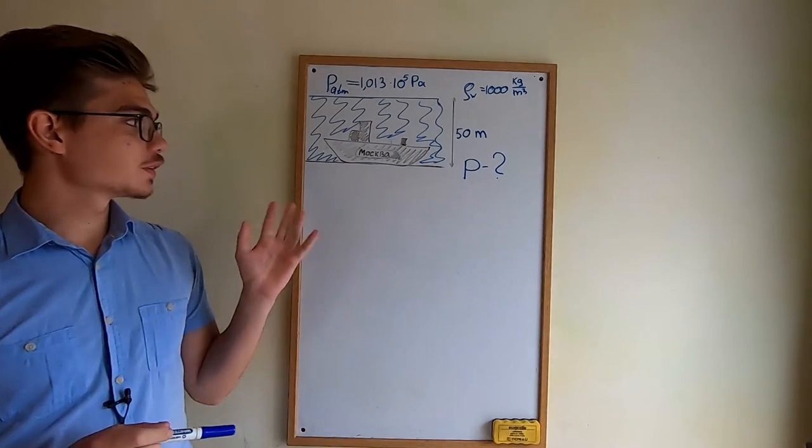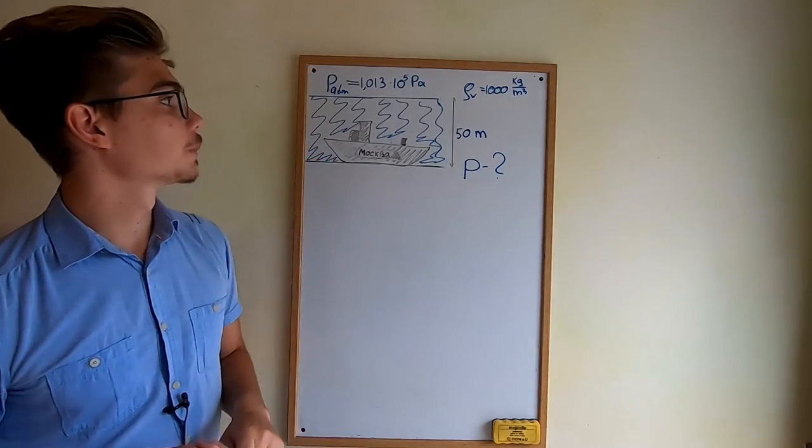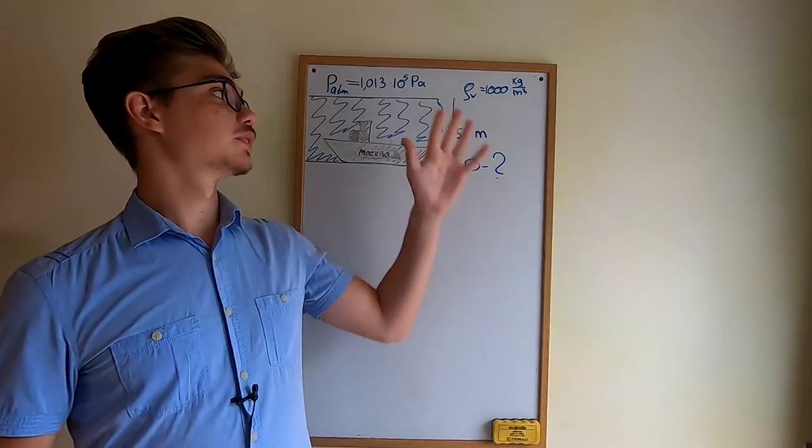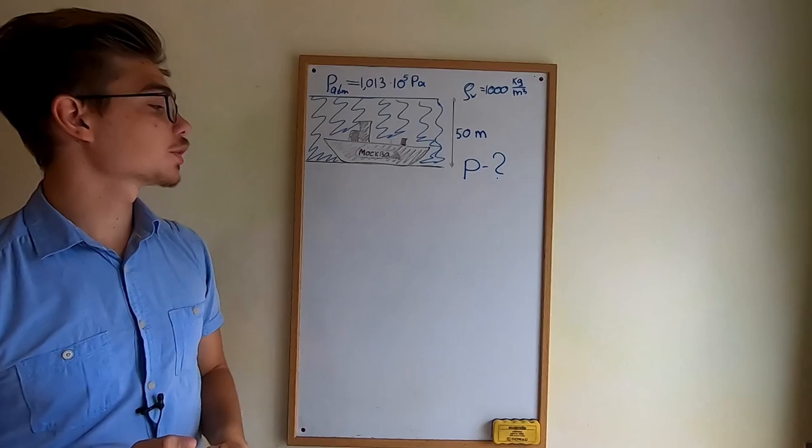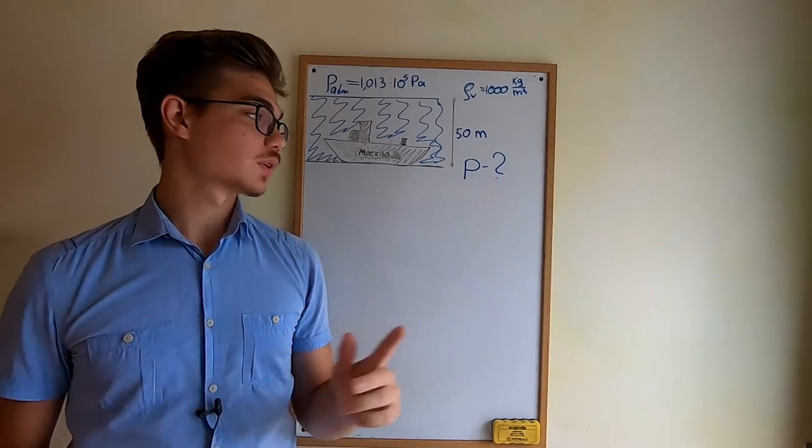So it is now rusting at the bottom of the Black Sea at around the depth of 50 meters, and we are also given the density of the water and the atmospheric pressure above it. What we want to find is the pressure that is acting on the ship.